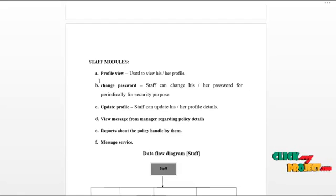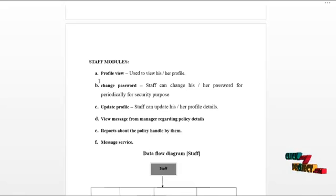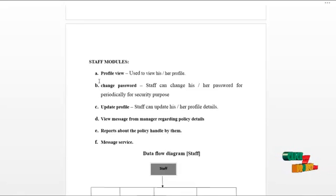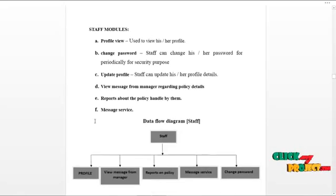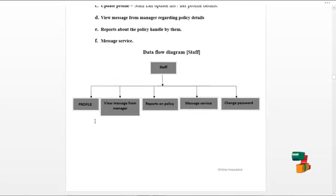Staff can view the message from the manager regarding the policy details. Staff can view reports about the policies handled by them. Staff can use mail service to communicate with the branch manager, customers, or with the agent. The data flow diagram for the staff is as shown below.